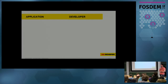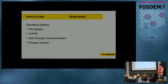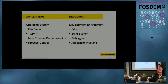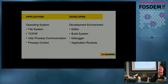Let's look at the different requirements for the application and the developer. The application needs the operating system: one that provides a file system, networking, IPC, and process control. The developer, on the other hand — it's the development environment that needs the OS. The developer expects an editor, a build system, a debugger. Developers also have to debug their code, so they need the application runtime environment. This is the reason why the developer also needs an operating system.